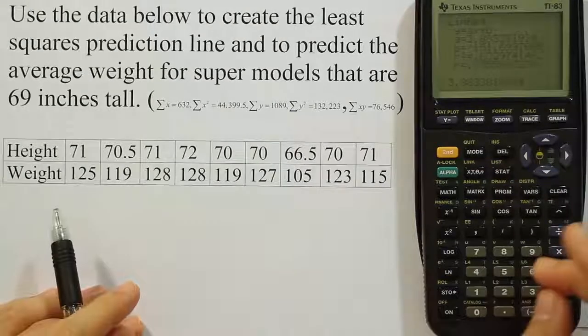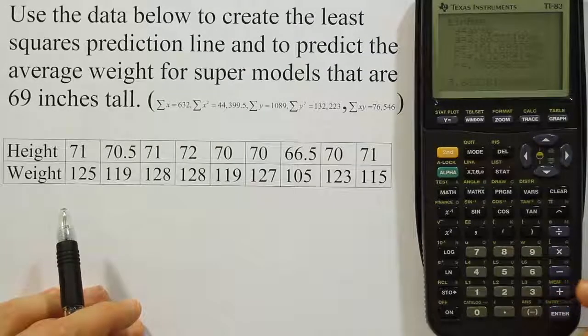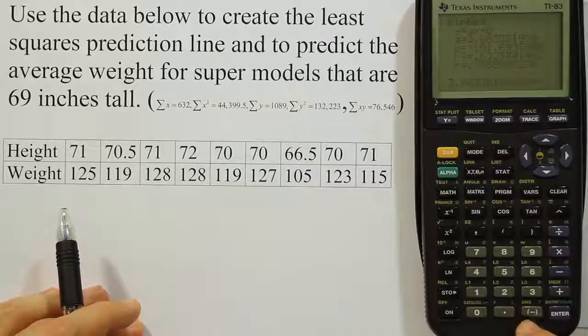Our x value in this problem is going to be 69. So I'll put 69 in there. And then I'll push plus the B value. And the B is negative.